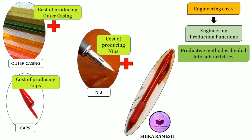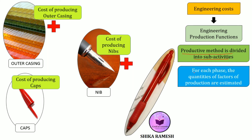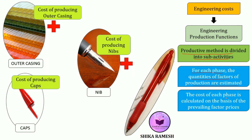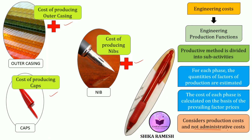To sum up: in engineering cost, a particular production method is divided into sub-activities, and for each phase the quantities of factors of production are estimated. The cost of each phase is calculated based on prevailing factor prices, and the total cost of the production method is the sum of the costs of its different phases. Importantly, in each phase the characteristics of the inputs determine the cost of production. Engineering costs usually refer only to production cost and do not include administrative costs — they exclude technical cost, managerial cost and entrepreneurial skills.